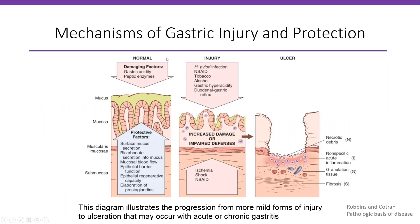Let's look at the mechanism of gastric injury and protection. In a normal situation you have damaging factors — acid produced in the stomach and peptic enzymes — which can damage the mucosa. However, you have protective factors: mucus on top protecting the epithelium, bicarbonate secretion into the mucus protecting against acid and enzymes, blood flow helping to clear damaging factors, an epithelial barrier, regenerative capacity, and prostaglandins, which stimulate all the defense mechanisms.